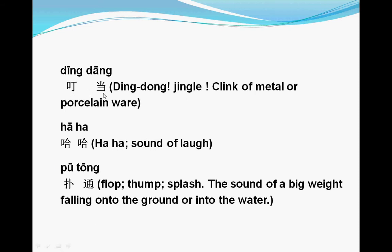The next one is dīng dōng. This is a very easy one. You can say dīng dōng, jingle, dīng dīng dōng dōng. The next one is hā hā — also a very easy one. When somebody laughs, they may just go hā hā hā hā. This is the sound of somebody laughing. Next is pū tōng — a flop, a splash. This describes the sound of something heavy falling onto the ground or into the water. We say pū tōng.